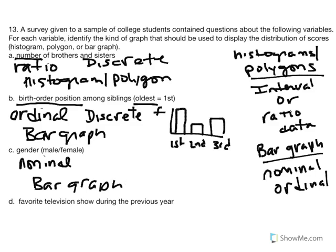Finally, if we want to determine if gender is continuous or discrete, we would conclude it's not a number and cannot be expressed as a fraction or smaller portion. So we know it's a discrete variable.